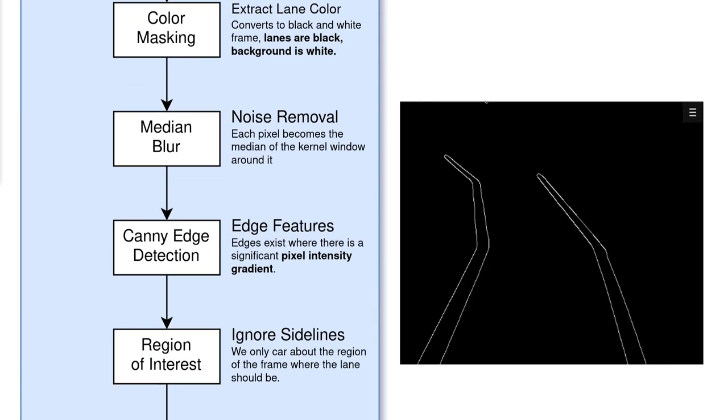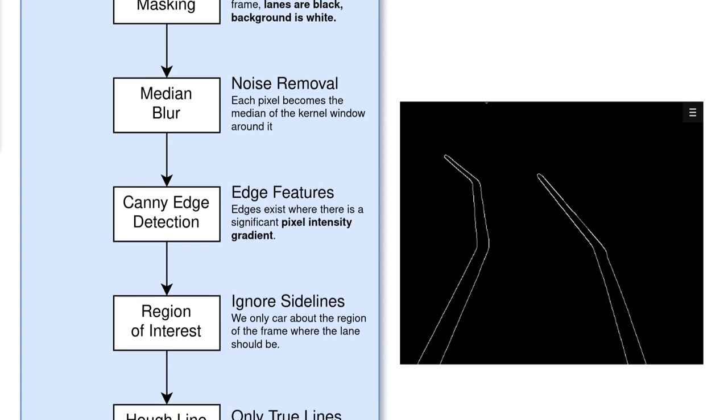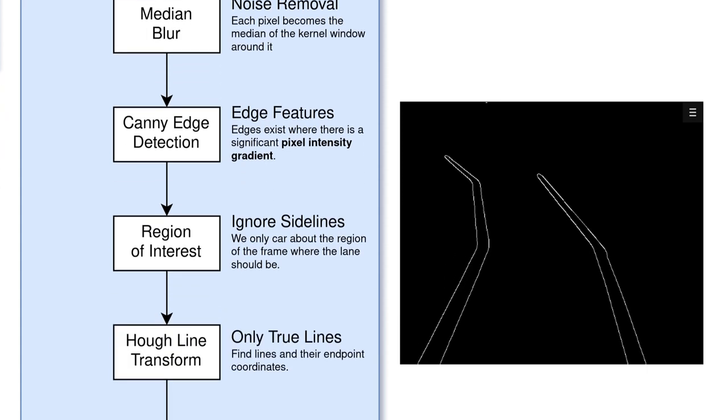Canny edge detection is done next, yielding edge features by looking for significant gradients in pixel intensity. Additionally, we know where in the frame the lane should be, so we simply ignore everything outside of the region that should contain the lane. This reduces the number of edge features which are not part of the lane, and parts of the lane which are not important yet.